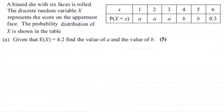Hi there. Now for this question we're told that a biased die with six faces is rolled and the discrete random variable x represents the score on the uppermost face. The probability distribution of x is shown in this table. For the first part we're given that E(x), the expected value of x, is equal to 4.2, and we're asked to find the value of a and the value of b for five marks.